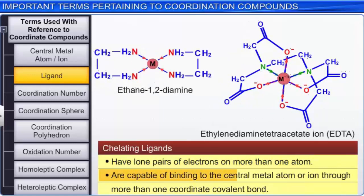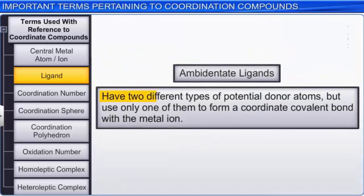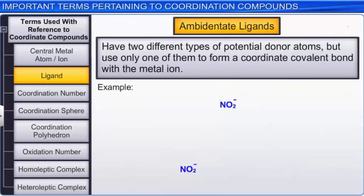Some ligands have two different types of potential donor atoms, but use only one of them to form a coordinate covalent bond with the metal ion. Such ligands are called ambidentate ligands. The NO2- ion is one such ambidentate ligand capable of coordinating to the metal atom or ion through the nitrogen or oxygen atom. Similarly, the SCN- ion can coordinate through the sulfur or nitrogen atom.